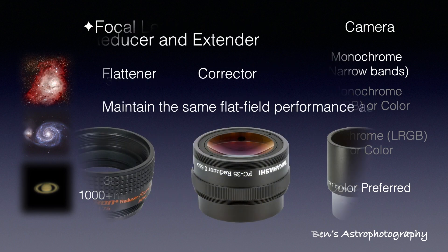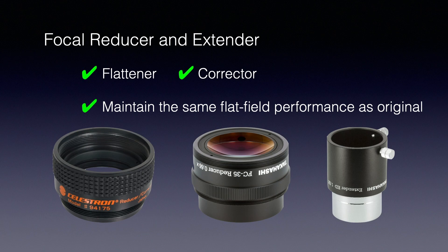Of course, most telescopes can be used with a focal reducer or extender, and sometimes they can change the telescope's focal length quite a bit. But I would only recommend those with a flattener in their names, or those that claim they maintain the same flat field performance as the native optical design. I have never seen a telescope that can perform well at two significantly different focal lengths. So if you are interested in both nebulae and galaxies, let's get two telescopes.